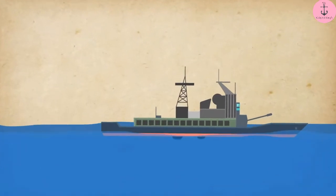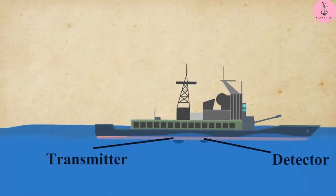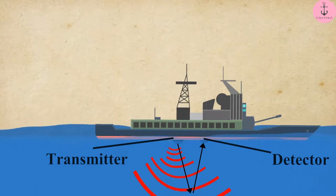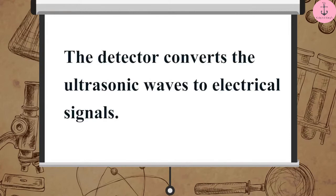The device consists of a detector and a transmitter, and it is installed in a boat or a ship. The transmitter produces and transmits ultrasonic waves. These waves strike the objects on the seabed and get reflected back to the device, which is then sensed by the detector. The detector converts the ultrasonic waves to electrical signals.